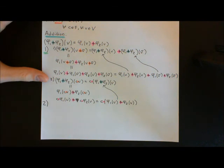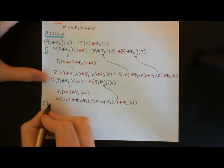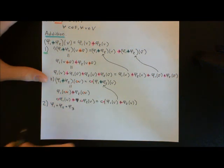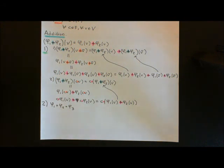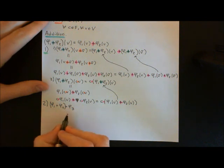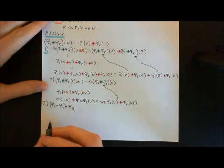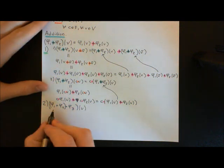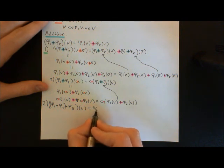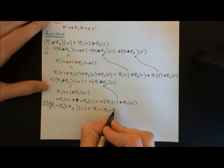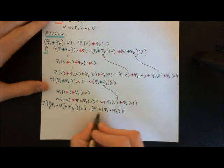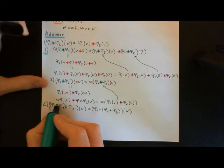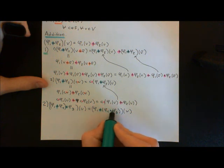Associativity is axiom number two. Addition must obey associativity, which means that if we want to consider the addition of three things — say, φ1 with φ2 with φ3 — then it should not matter where we put the brackets. We can either put the brackets around φ1 plus φ2, or we can put the brackets around φ2 plus φ3, and these two things must be the same. We'll write of v, because after all this is a function. All of these additions are the addition in the dual vector space that we've just defined.